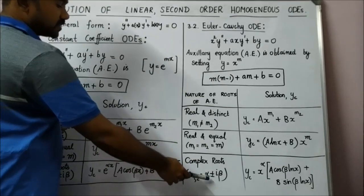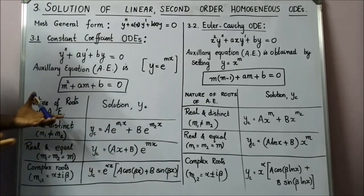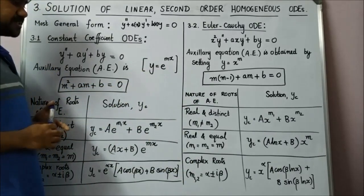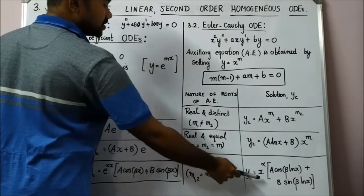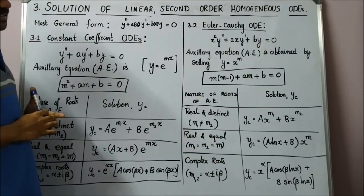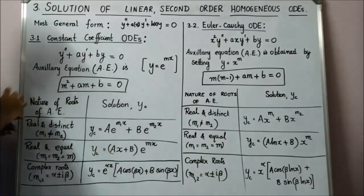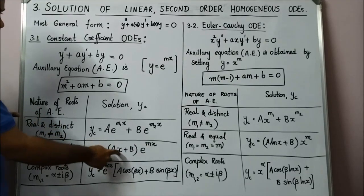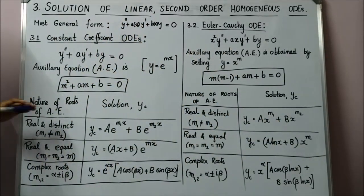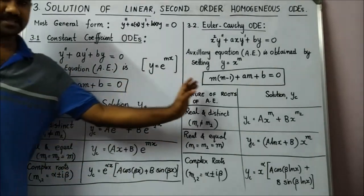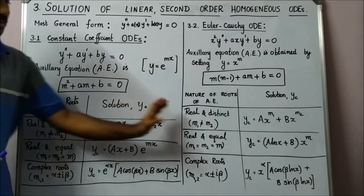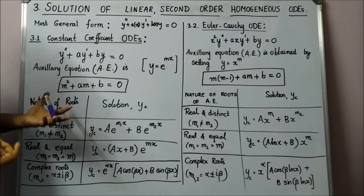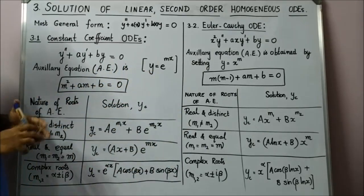If the roots are complex — m1,2 = α ± iβ — the solution is Yc = x^α · (A·cos(β·ln x) + B·sin(β·ln x)). If you look at the two cases (constant coefficient and Cauchy-Euler), there is a one-to-one correspondence: wherever you had e^(mx), you have x^m; wherever you had x, you have ln x. That's the only difference. Memorize both tables before the exam, and if you get a Cauchy-Euler equation directly, you can write the solution in no time.